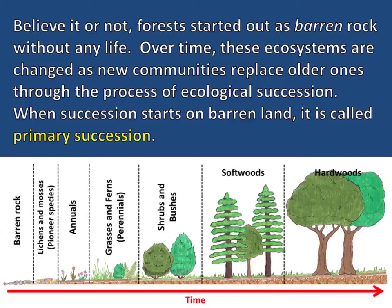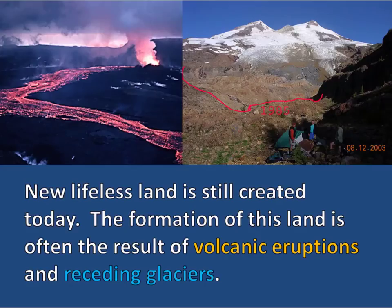Believe it or not, forests started out as barren rock without any life. Over time, these ecosystems changed as new communities replace older ones through the process of ecological succession. When succession starts on barren land it is called primary succession. New lifeless land is still created today, often as the result of volcanic eruptions and receding glaciers.